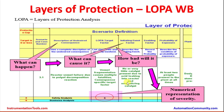The LOPA workbook also captures the initiating factor — which event can cause a particular consequence — along with the enabling factor and probability of exposure, indicating how many people will be exposed in that process area. On the right side, there are different protection layers and the credits associated with each: BPCS Basic Process Control System, operation alarms and operator response to alarms, the safety instrumented system layer, and mechanical protection layers like pressure relief valves and rupture discs.